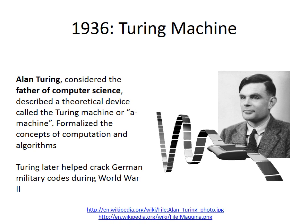In 1936, the Englishman Alan Turing described a theoretical device called the Turing machine. This hypothetical device manipulated symbols on a strip of tape according to rules from a table, and could simulate the logic of any computer algorithm. Turing was also instrumental in helping the Allies win World War II by cracking German military codes. Turing's contributions to computing have earned him the title father of computer science.